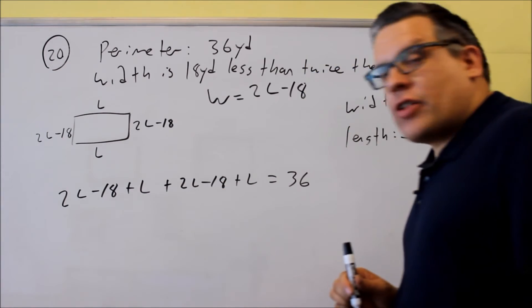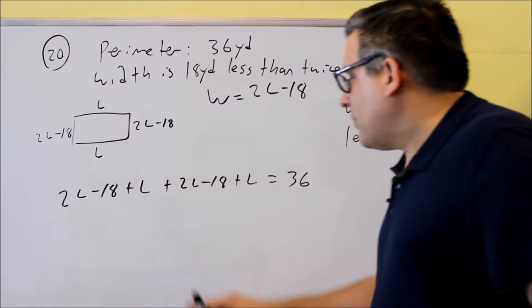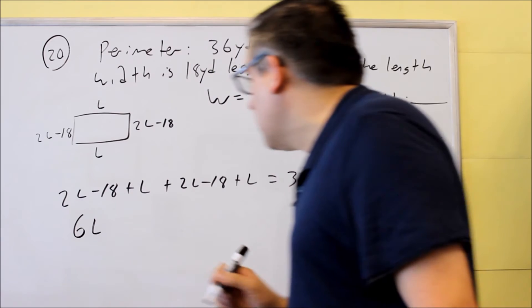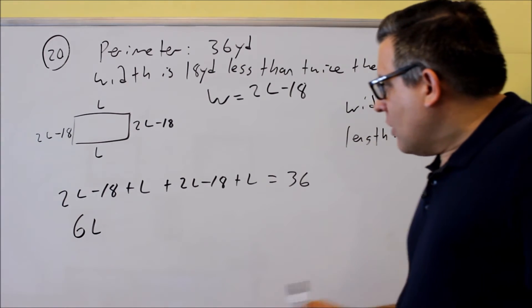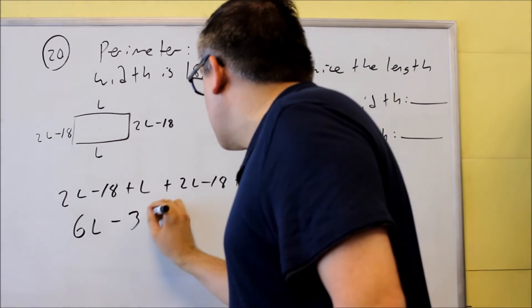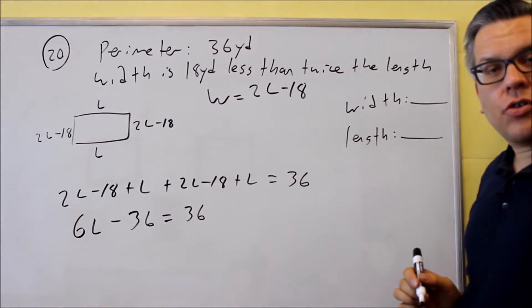Now it's just a matter of adding the like terms together. You have 2L, L, 2L, and L. If I add all that together, I get 6L. Minus 18, minus 18, more like terms, I get minus 36 equals 36.